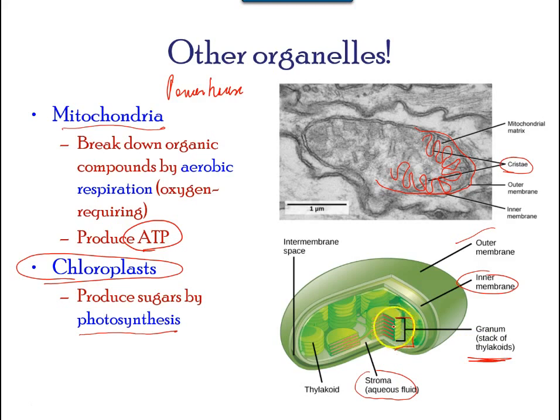Each stack of thylakoids is called a granum, plural grana. The fluid enclosed by the inner membrane surrounding the grana is called the stroma. The chloroplasts contain a green pigment called chlorophyll, which captures the energy of sunlight for photosynthesis.